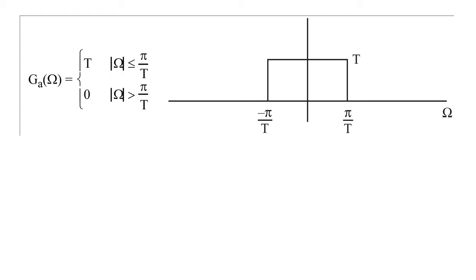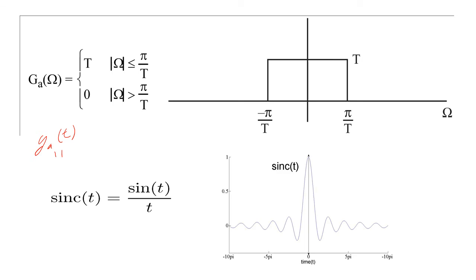If we take the inverse Fourier transform of g sub a of omega, we discovered that our D2A, g sub a of t, must be a sinc function.